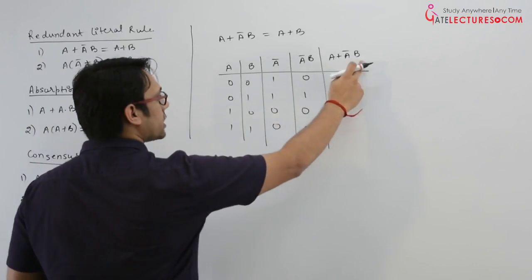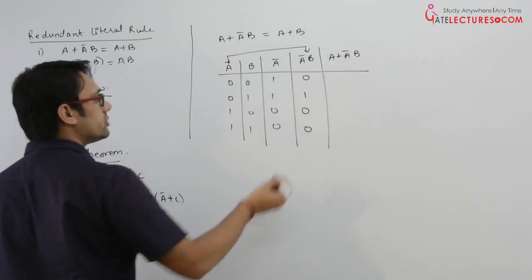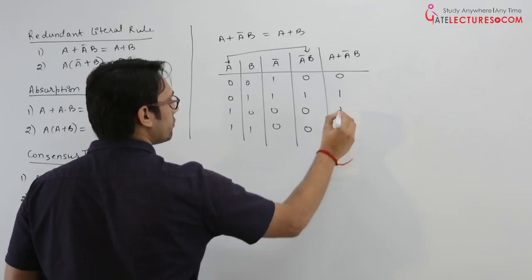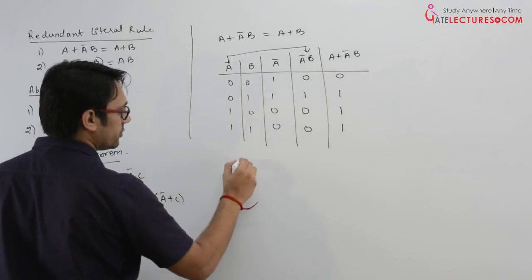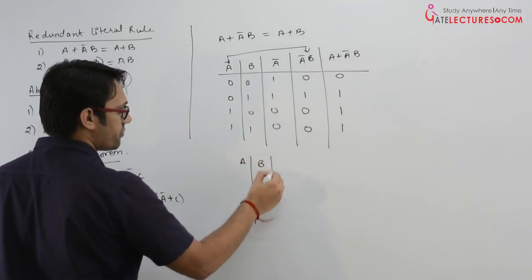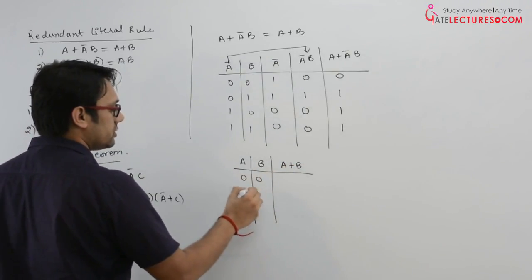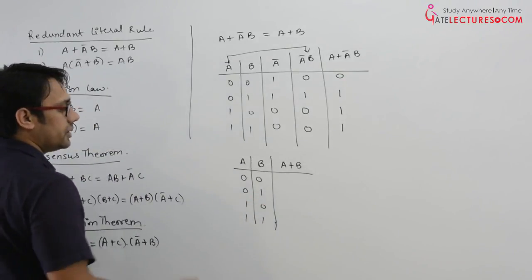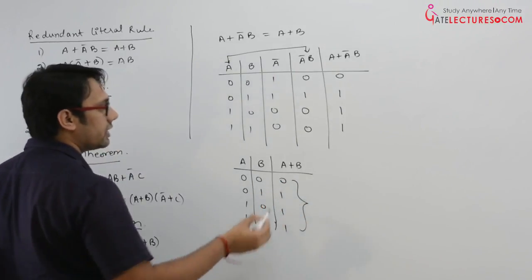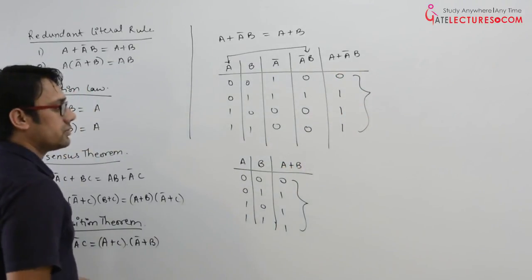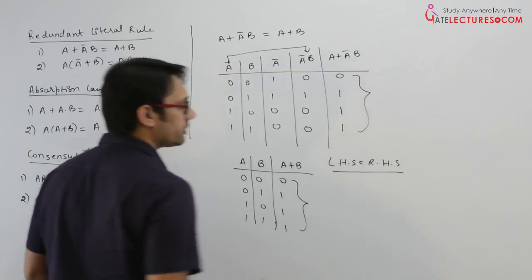Then what is A plus A complement B? That means we apply OR between A and A complement B. The OR result will be 0, 1, 1, 1. Now if we make A plus B directly — with combinations 00, 01, 10, 11 — then A OR B is 0, 1, 1, 1. As you can see, both columns are the same, so left hand side equals right hand side.